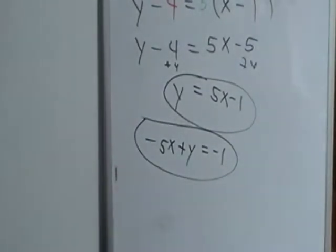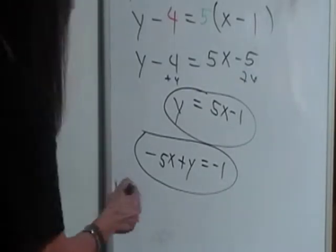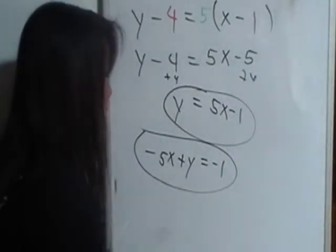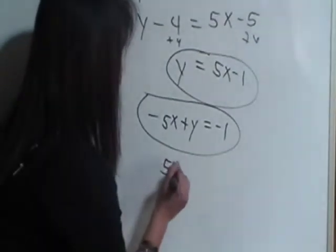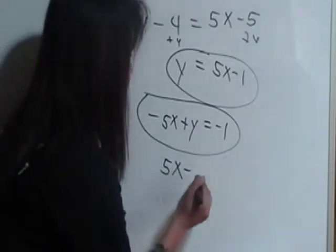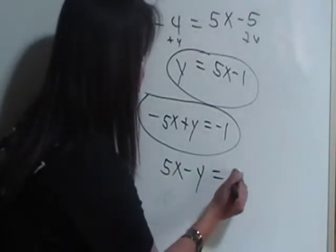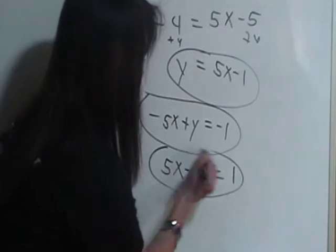Now if you're bothered by the negative sitting in front of the x there, we can multiply across the board by negative 1 to get another form of the standard form, which is 5x minus y equals 1.